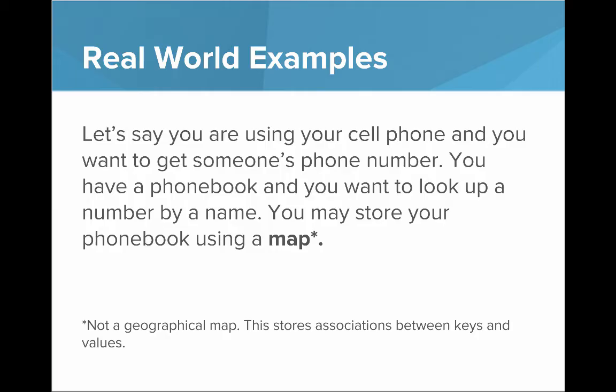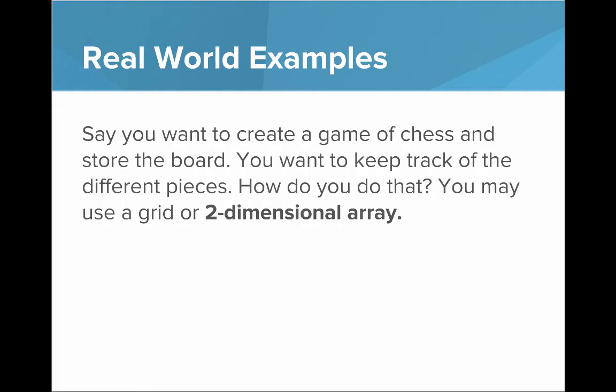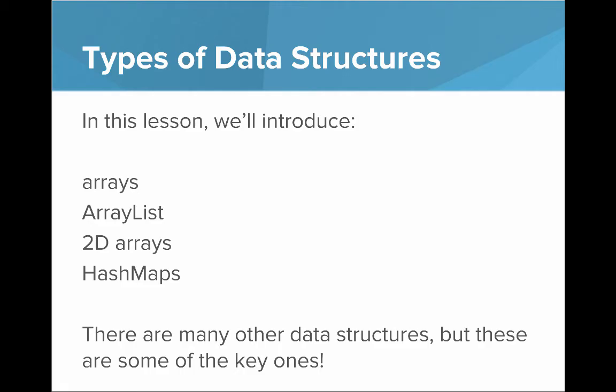Let's say you're using your cell phone and you want to get someone's phone number. You have a phone book and you want to look up a number by a name. You might store your phone book using a map — and note this isn't a geographical map, this is a map that stores associations between keys and values. Or say you want to create a game of chess and store the board — you might use a grid, or a two-dimensional array.